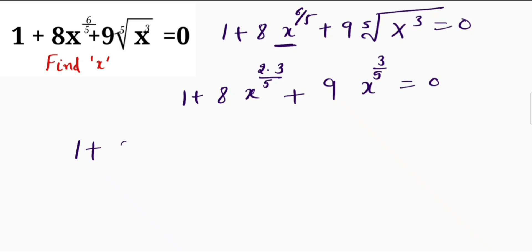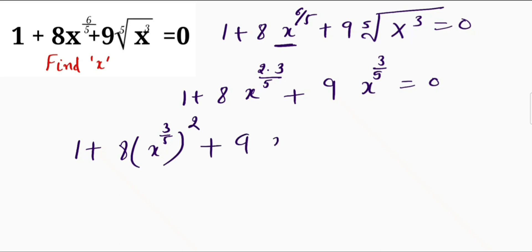So 1 plus 8x — I can write this as raised to the power 3 by 5, and I will take the 2 out. So plus 9x raised to the power 3 by 5 is equals to 0.